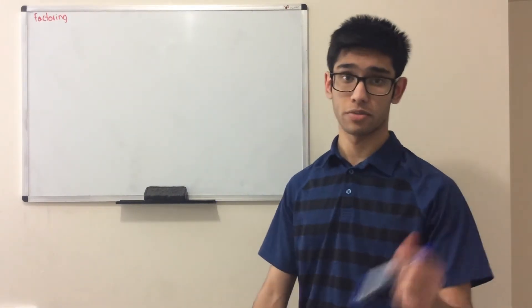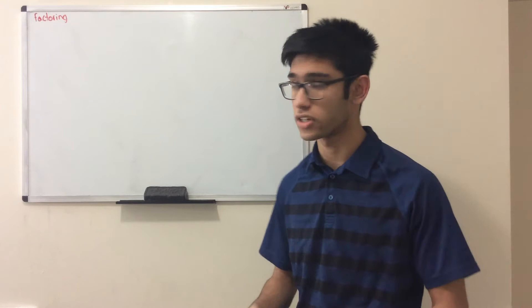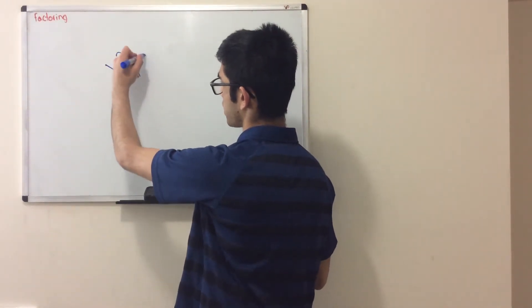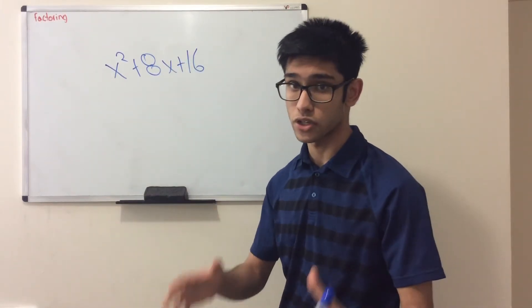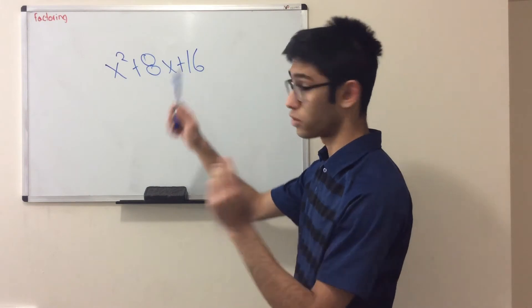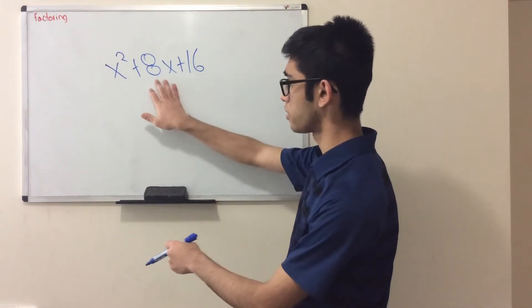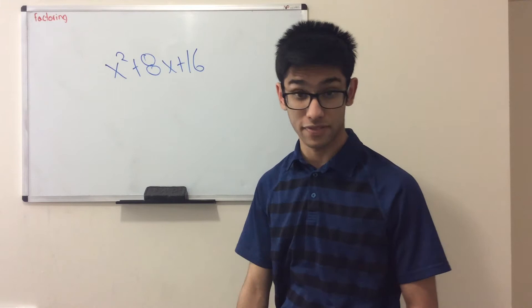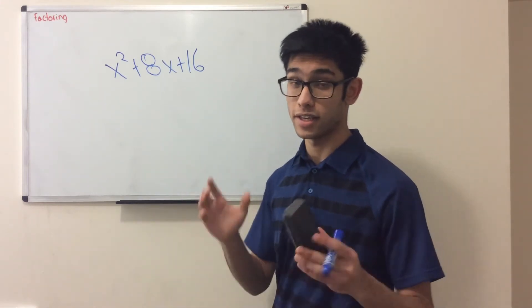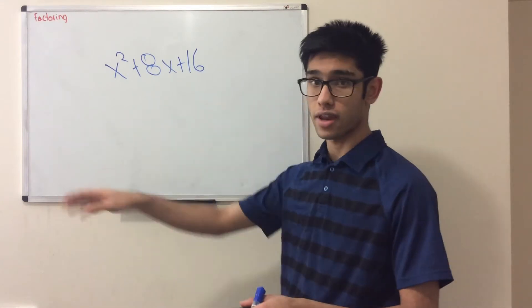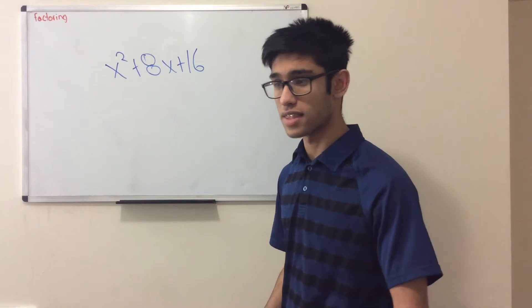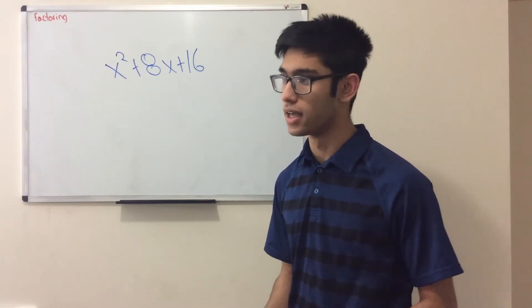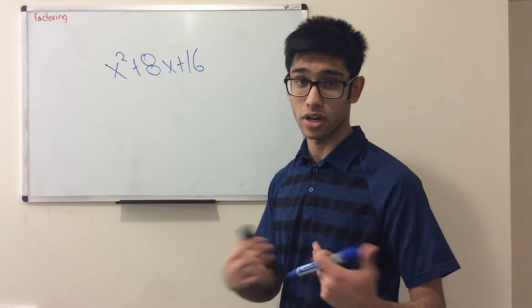We're going to continue talking about factoring. If you watched the previous video, it covered simple factorization — things like x squared plus 8x plus 16 — where you find two numbers that add to the middle number and multiply to the last number. If you practiced that, welcome to this video where we continue with factoring.